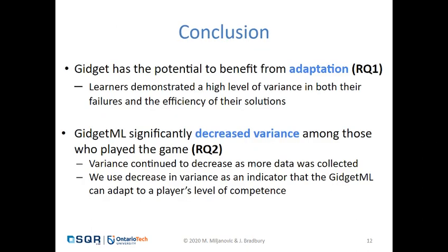In conclusion, we found that Gidget does have the potential to benefit from adaptation, as addressed in our first research question. Learners demonstrated a very high level of variance in both their failures and the efficiency of their solutions. Those who played GidgetML showed significantly decreased variance that continued to decrease as more data was collected, and we used that decrease in variance as an indicator that GidgetML can adapt to a player's level of competence.